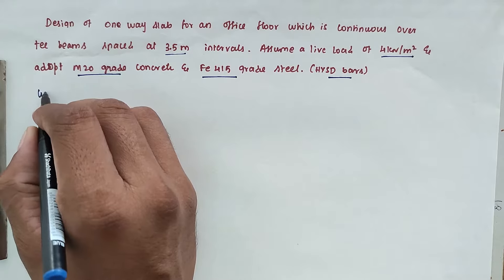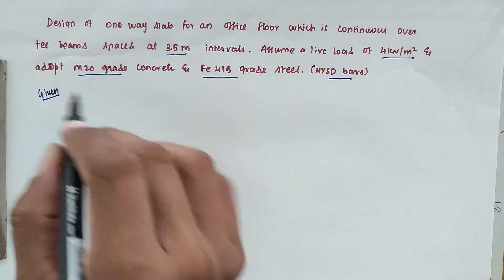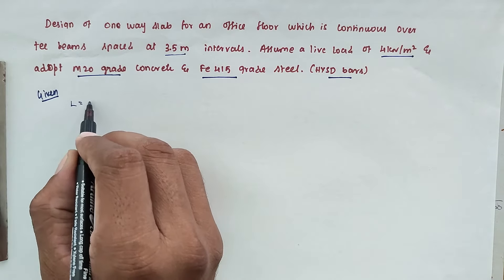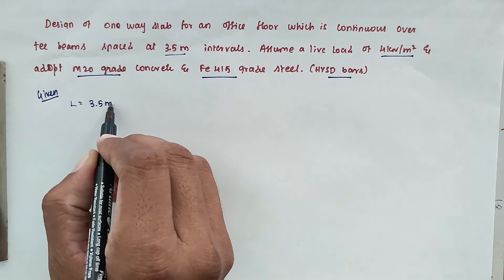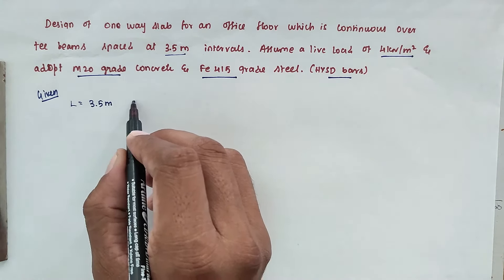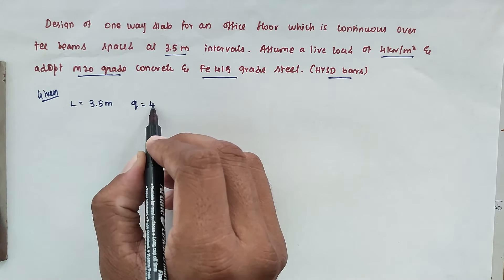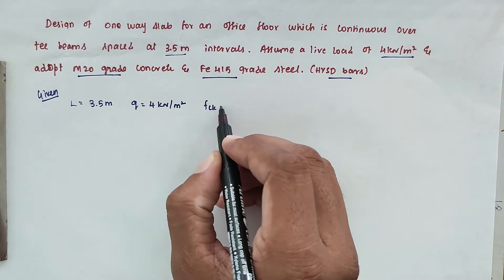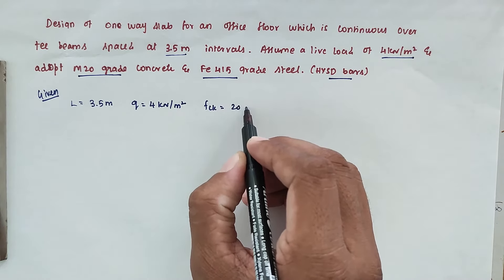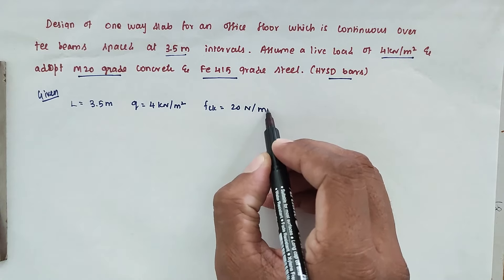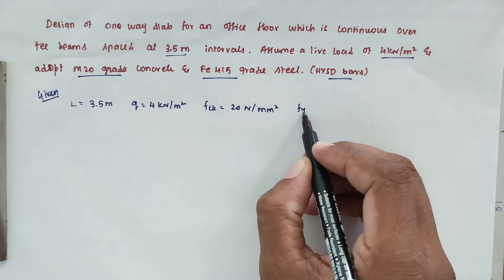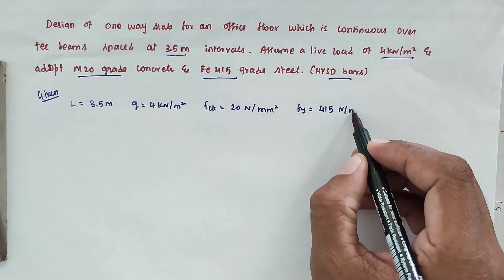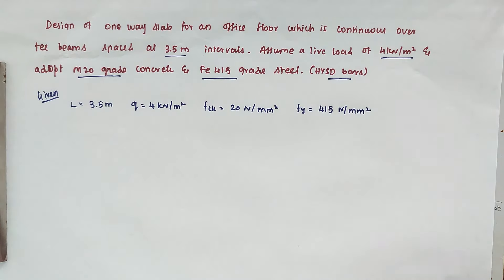The given data: L equals 3.5 meters, load Q equals 4 kN per meter square, fck equals 20 N per mm square, and fy equals 415 N per mm square. These are all the given values.